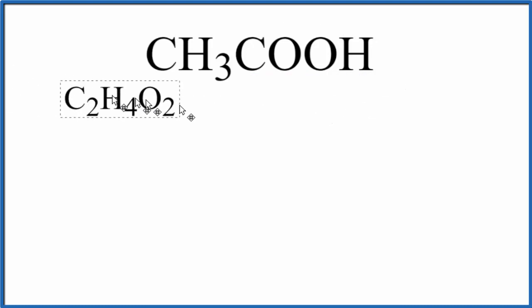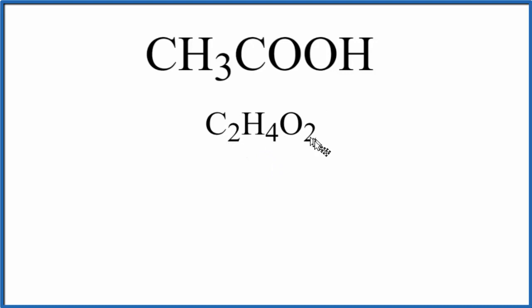Sometimes you'll see it written like this. You'll see it written as C2H4O2. Each one of these has the same number of atoms, just a different way of writing it. I like this way because it shows you the carboxylic acid, which makes acetic acid an acid.